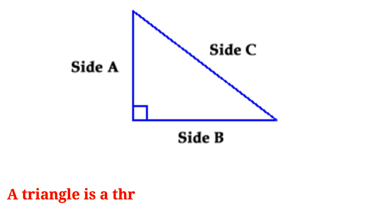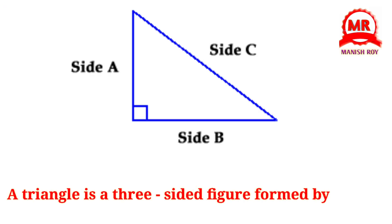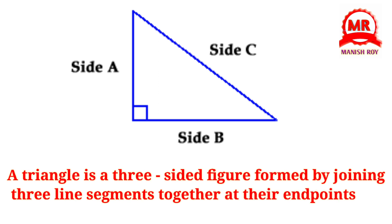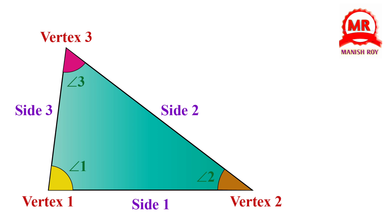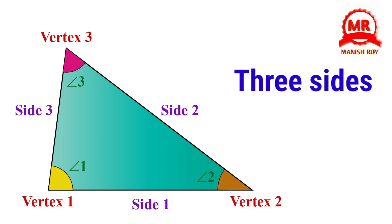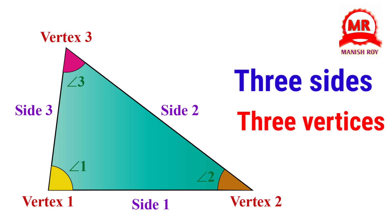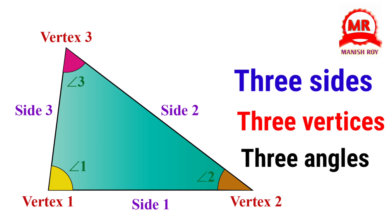A triangle is a three-sided figure formed by joining three line segments together at their endpoints. As you can see in this figure, a triangle has three sides, three vertices, and three angles.